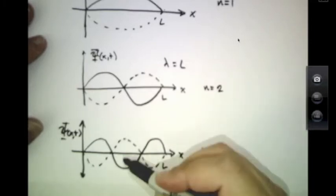And again, at time t equals 0, it looks like this. The dashed line represents half a period later, because it's just a standing wave. Things are oscillating up and down like this, but not traveling left and right.